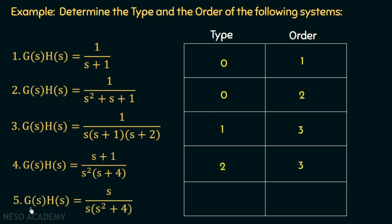Example 5: G(s)H(s) = s / [s(s²+4)]. This system has a pair of complex conjugate poles, one pole at the origin, and one zero at the origin. The zero and the pole at the origin cancel each other, giving G(s)H(s) = 1/(s²+4). After cancellation, there is no pole at the origin, so the type is zero and the order is two since the highest power of s equals 2.